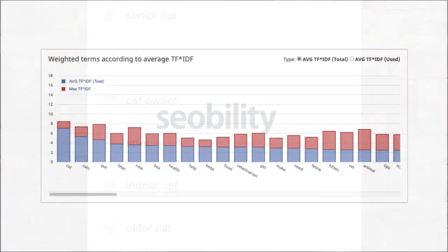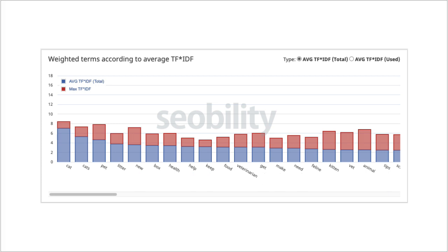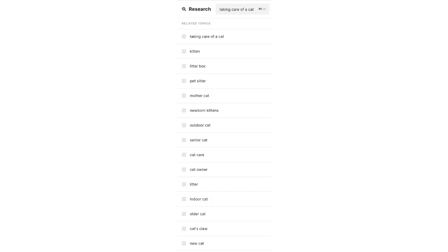Now look at this example from a free TF-IDF tool for the same subject. It only shows one-word topics — unigrams — and many in the model simply aren't helpful, such as new, help, keep, get, make, need, tips, and so on. It's an example of what we call poor data fidelity. Topic models are a great shorthand that reveals the most important topics to address when covering a subject. It's nice and concise, but the challenge for writers is turning that data into a compelling narrative, which we cover in the next module.